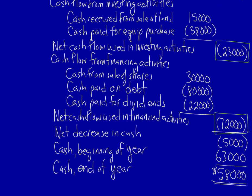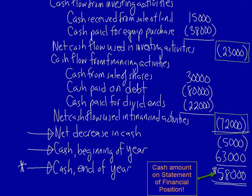In the end we must have a net change in cash. When combined with the opening balance from the beginning of the year, the net change in cash will always result in the cash balance at the end of the year. This number will always tie in to the cash amount on the statement of financial position under current assets.